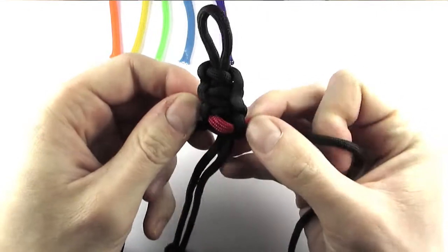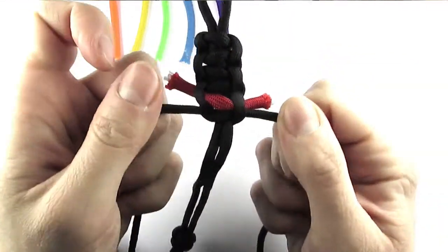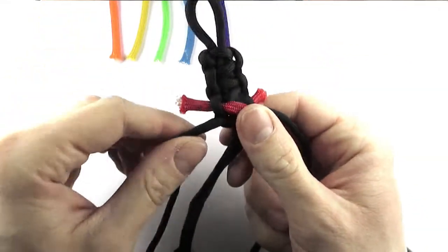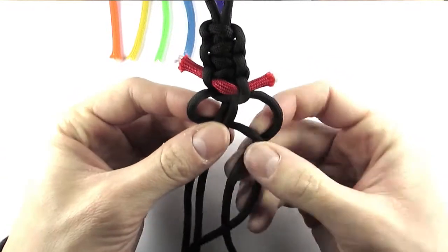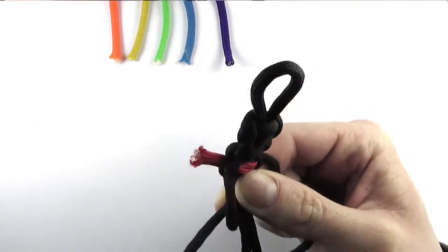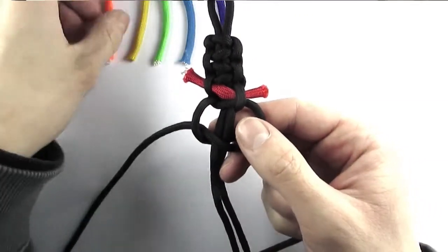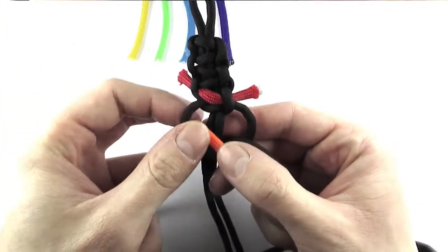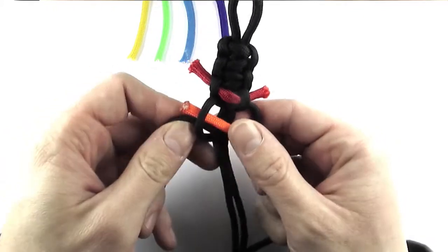I'm now going to insert the orange piece by again making a cobra knot to the left. Then before tightening I'm going to insert the orange end through the knot and then tighten it up.